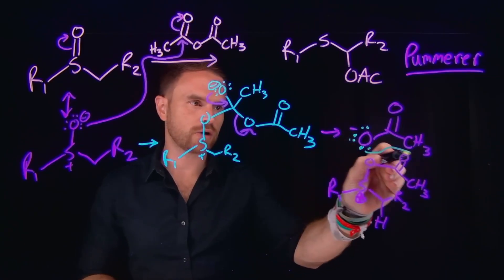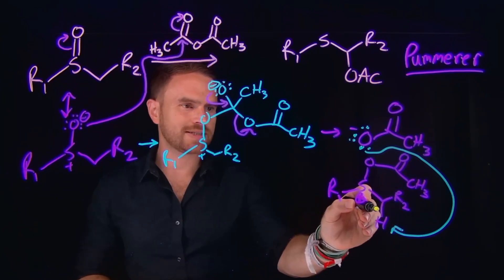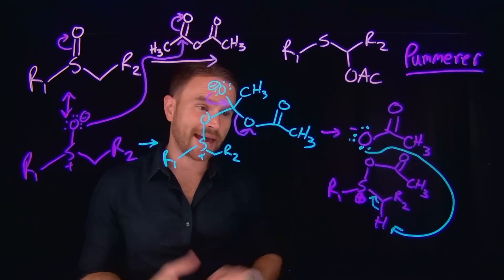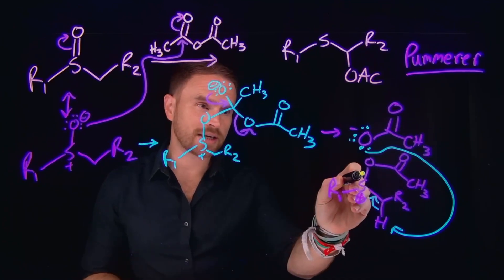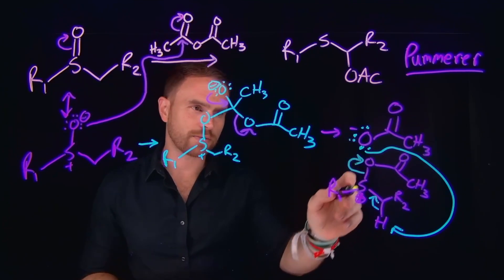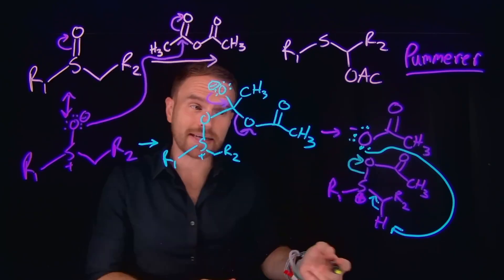So what we'll do is we'll come and deprotonate this hydrogen, which will allow these electrons to now come down and form a new carbon to sulfur double bond. And in doing so, it will also subsequently kick off another acetate because now we're going to end up with this carbon to sulfur double bond and this acetate will leave as a leaving group.